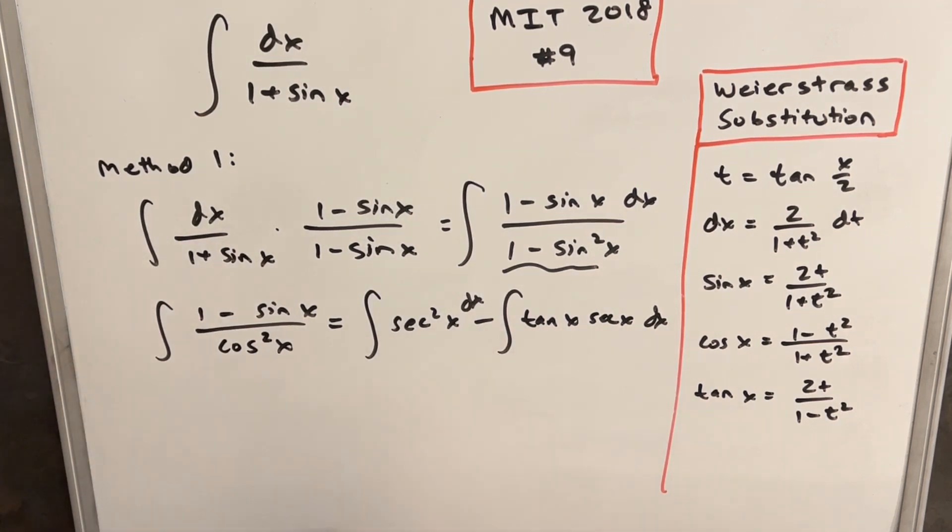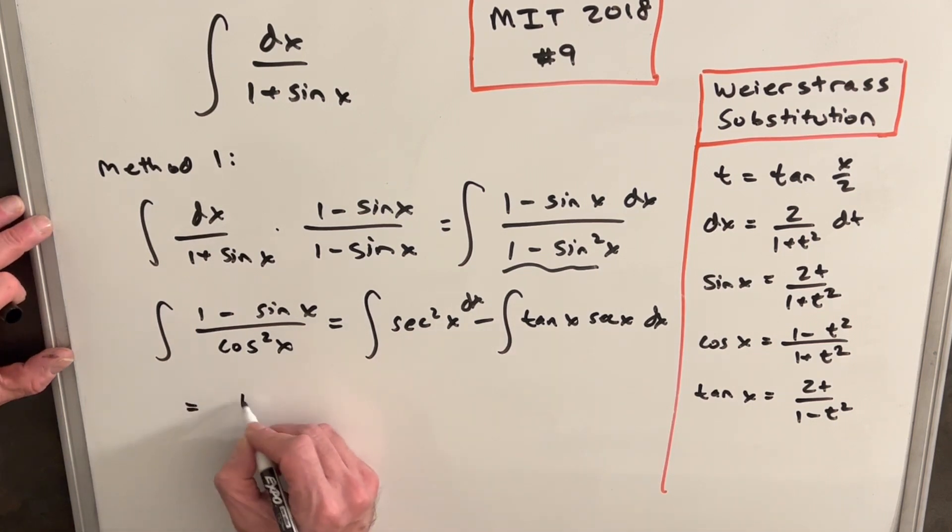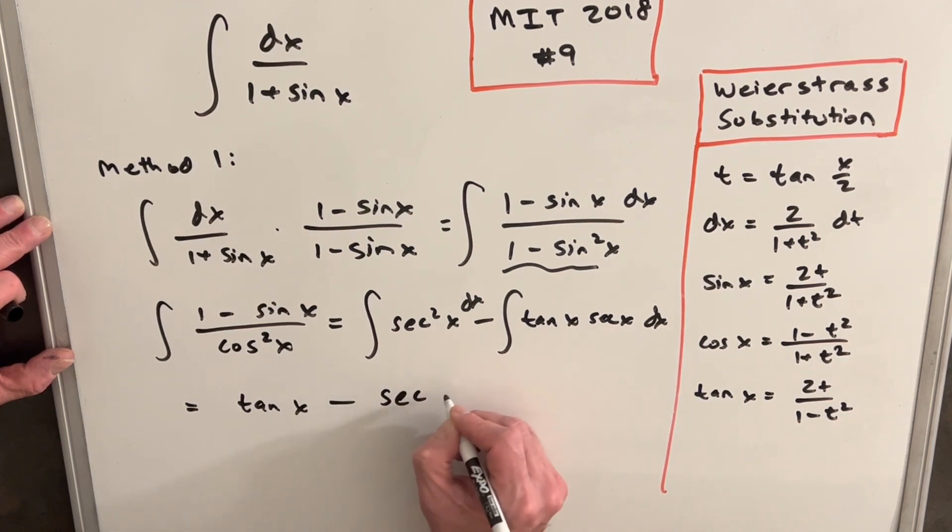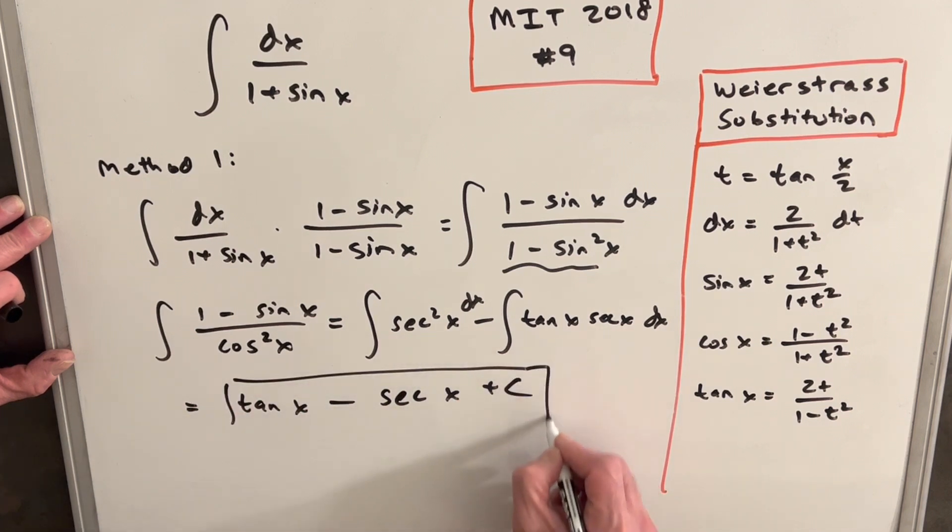And these are each very common integrals. Integral of secant squared is actually just tan x. And the integral of tan x sec x is just secant x plus c. And we have an easy solution.